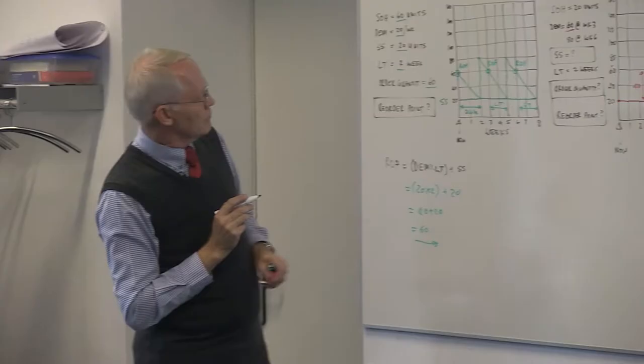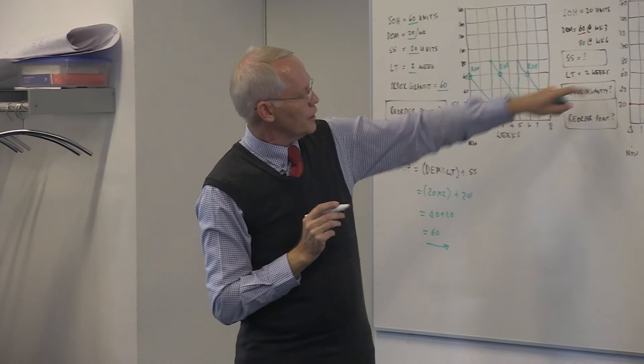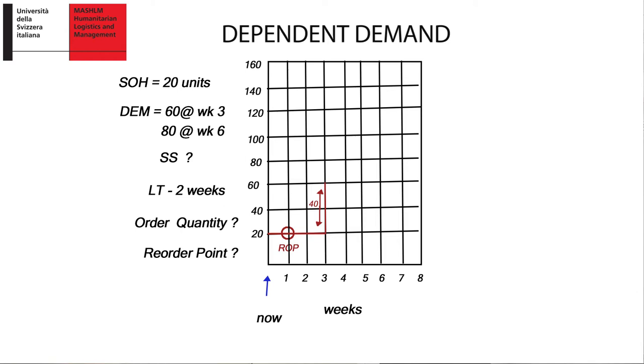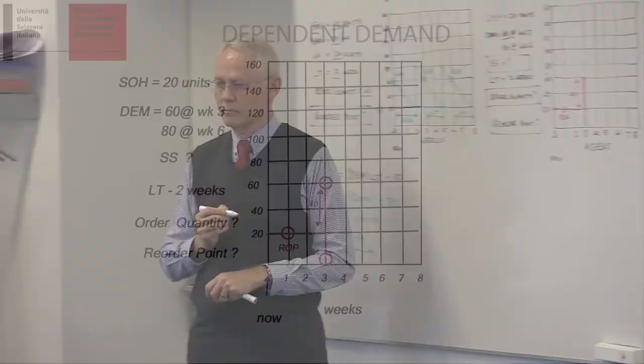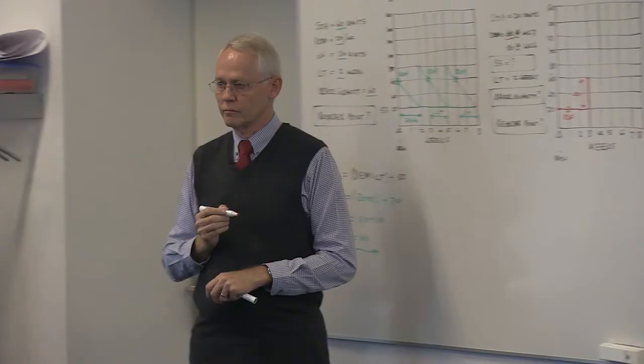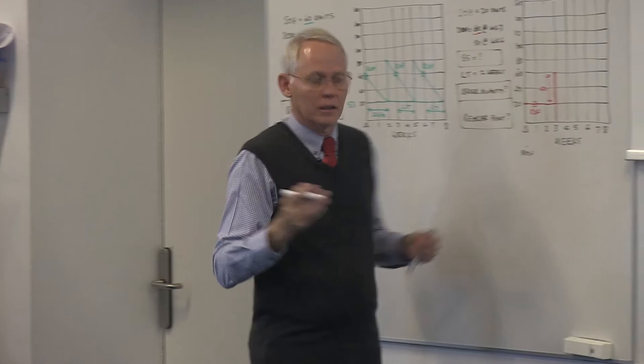Two weeks earlier. So, two weeks earlier. So, that's my reorder point. Do you agree with that? That's my reorder point. Two weeks before I need it. I get 40. I'm standing on 60 and I use them immediately because I issue them now to the factory and they build bicycles. My stock is zero. No problem. I don't need stock. When do I need stock again? Week six. You agree?